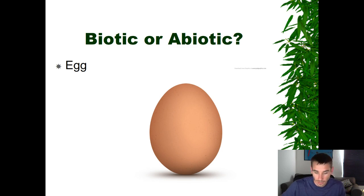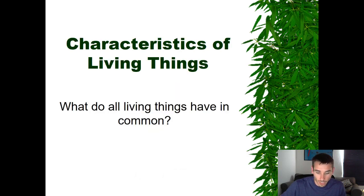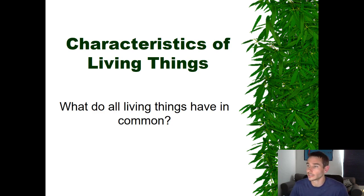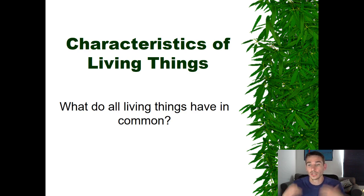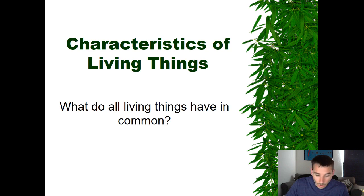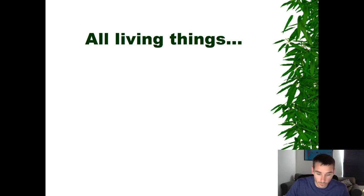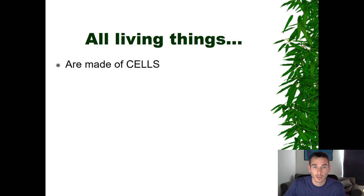We'll go over those examples in class. Moving on, we're going to cover the characteristics of living things. This is the list of things that scientists have agreed all living things would have in common. Let's start with the first characteristic: all living things are made of cells.